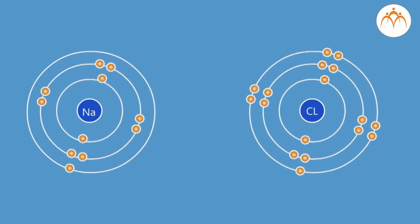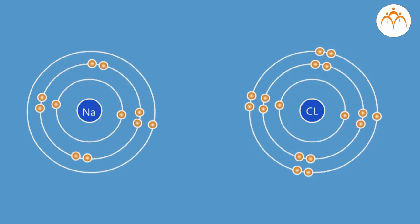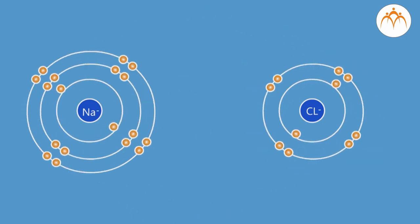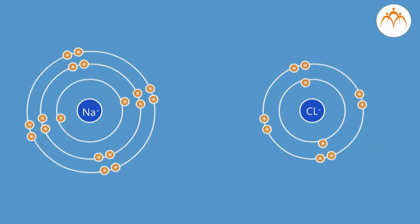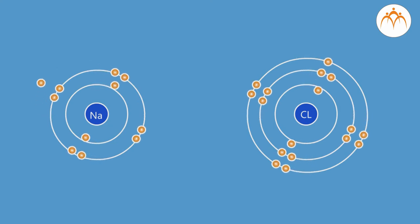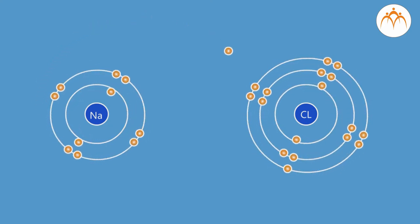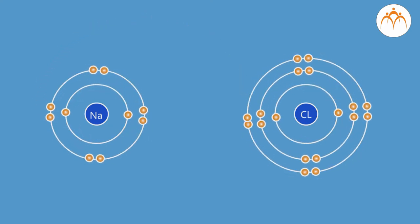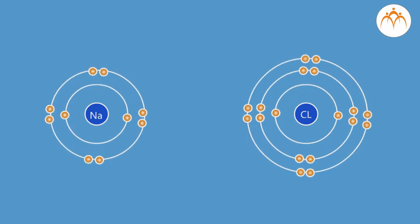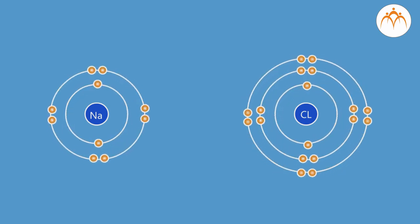Accepting seven electrons by Na would be difficult, and removing seven electrons from Cl would also be difficult, as compared to donating one electron by sodium to chlorine. Thus, both atoms are converted to ions by completing their octets.